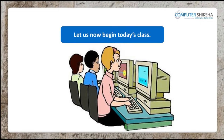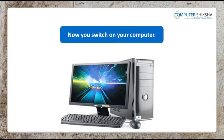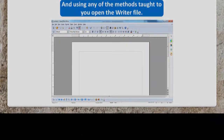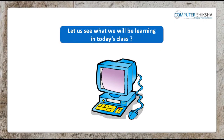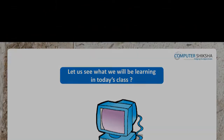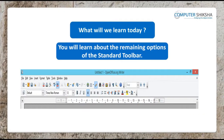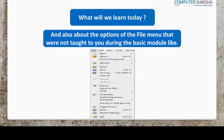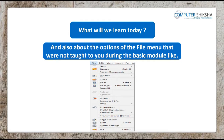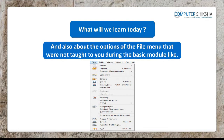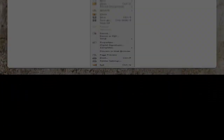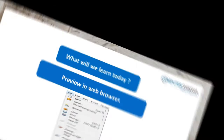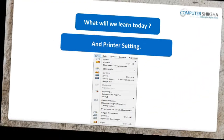Let us now begin today's class. Switch on your computer and open the writer file. You all will learn about the remaining options of the standard toolbar and also about the options of the file menu that were not taught to you during the basic module, like send, properties, templates, preview in web browser, and printer setting.